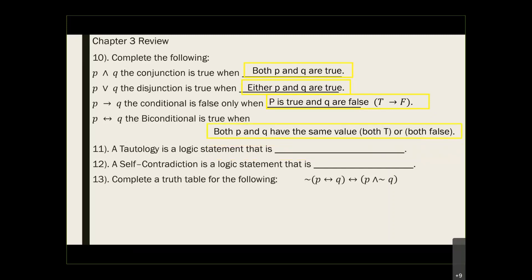For the biconditional statement, you need two of the same value — they both need to be true to be true, or they're both false to be true. This is just a reminder to refresh your memory on when AND is true or false, when OR is true or false, and so forth.